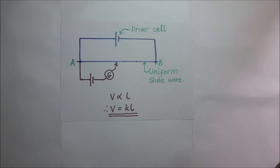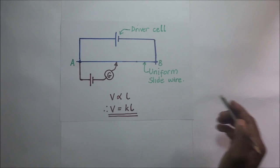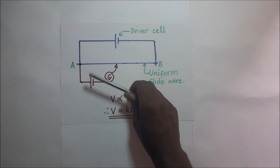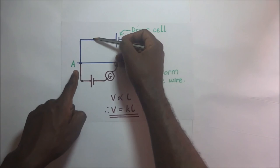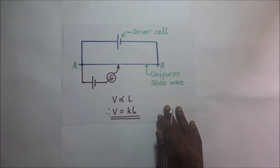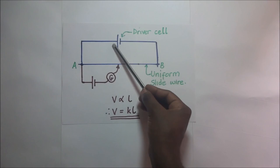In order to obtain a balance point, this unknown pd connected in the secondary circuit must be connected in opposition to the driver cell. By this I mean that the positive terminal here should be connected to the positive terminal right there — the two connect at point A. And of course the EMF of the driver cell has to be greater than the EMF in the secondary circuit for you to be able to obtain a balance point.